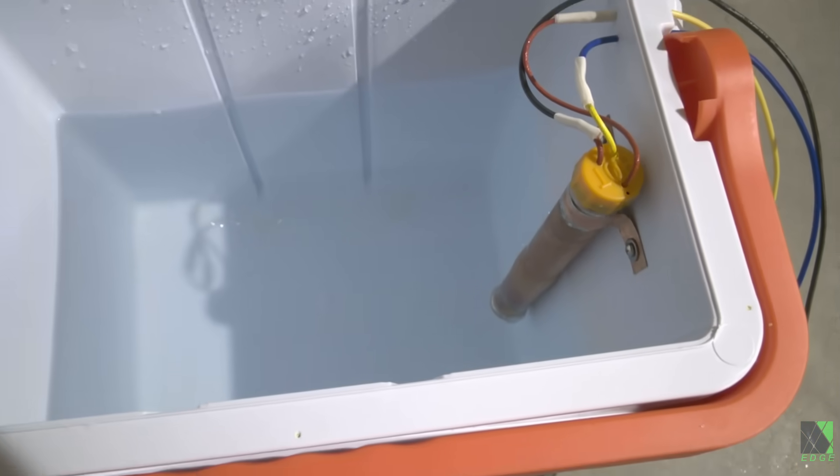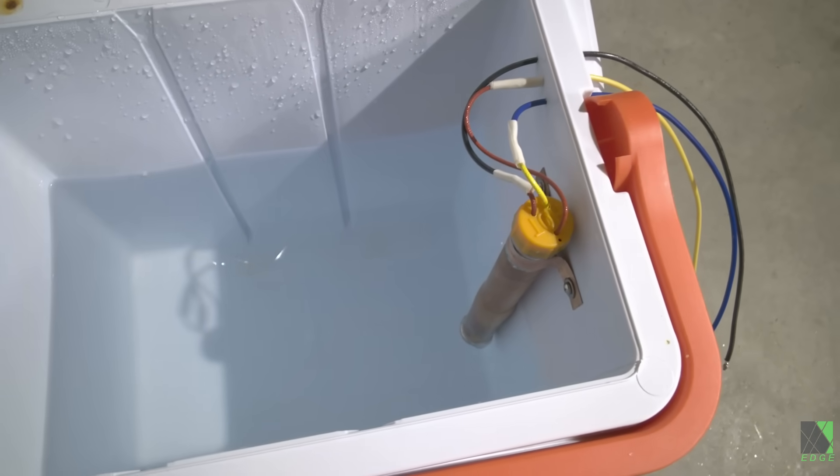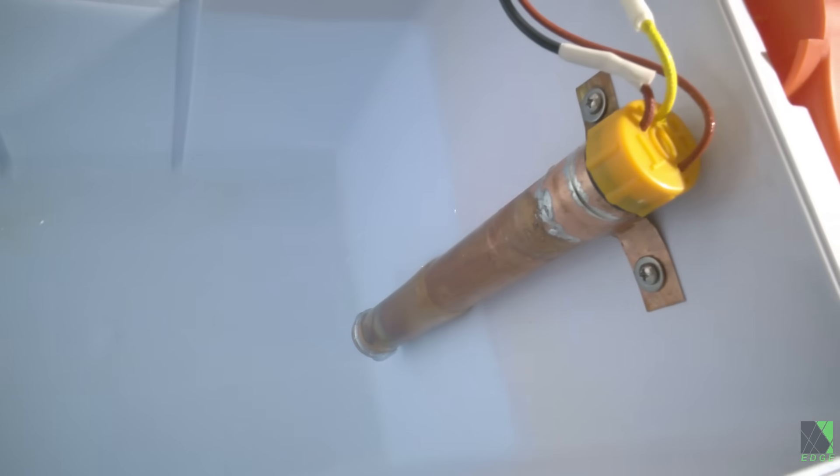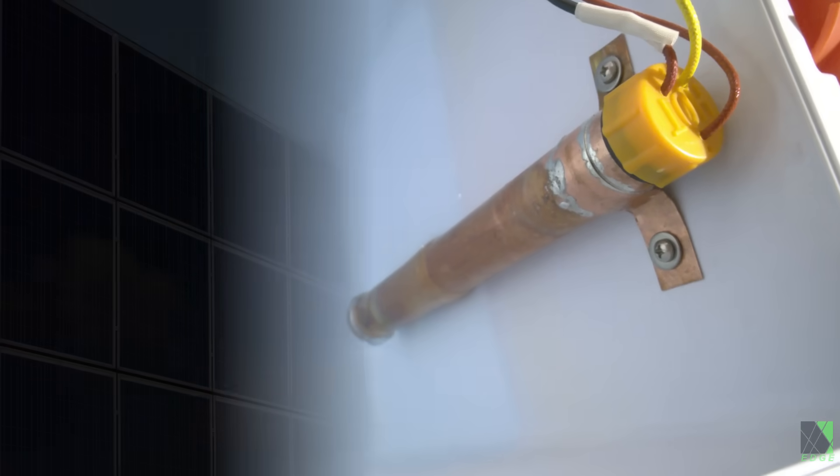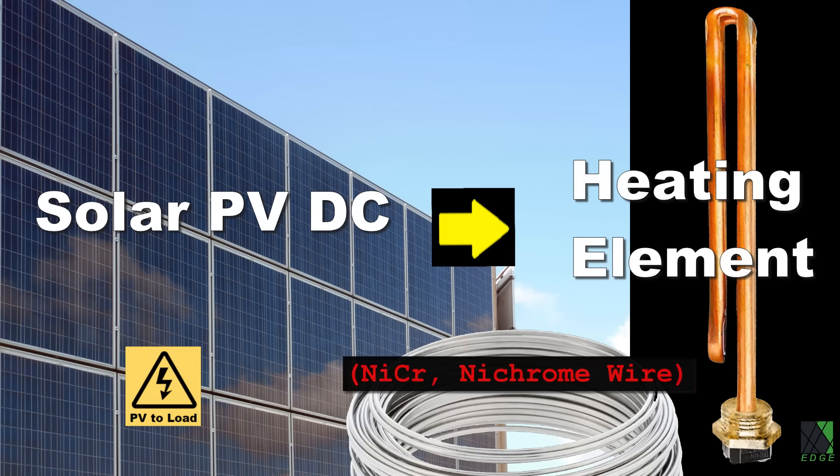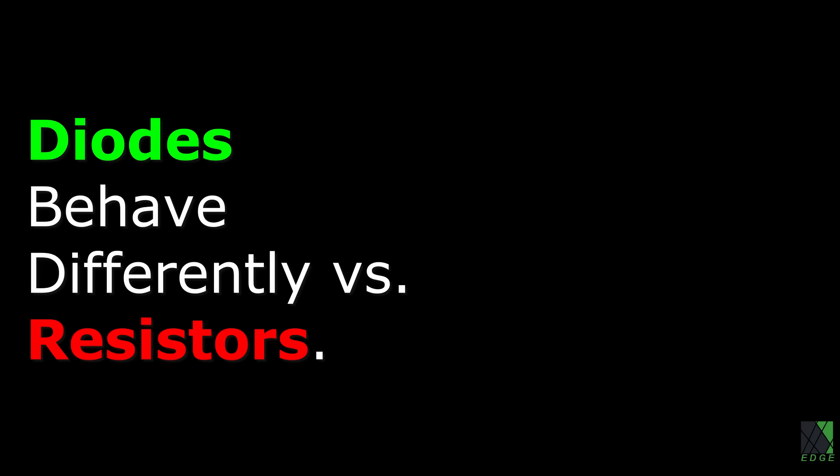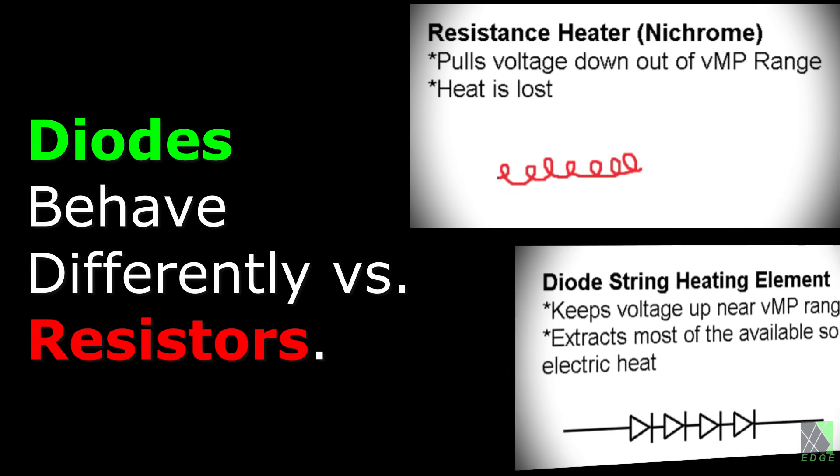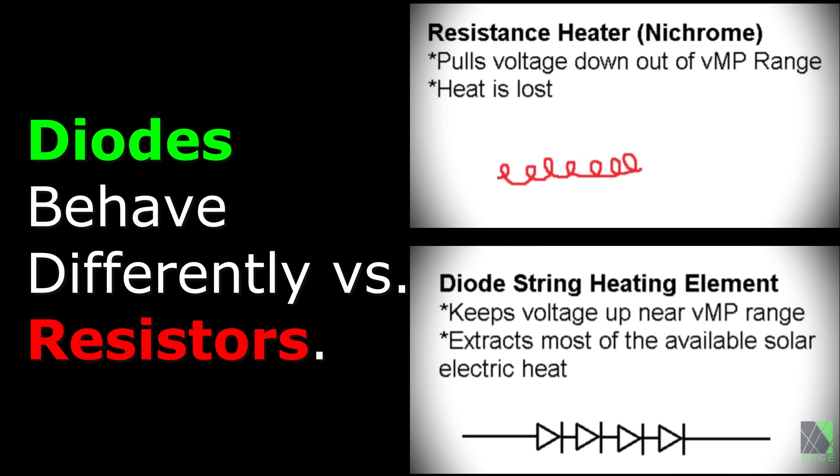What we're looking at here is the second version of a prototype solar electric immersion hot water heating element. It uses semiconductor technology—in other words, it's a diode chain. A traditional nichrome or Kanthal A1 resistance heating element can be directly attached to a solar panel to make heat, for example in a residential hot water heater. A diode chain heating element is not based on resistance and does not behave like a resistance heating element.